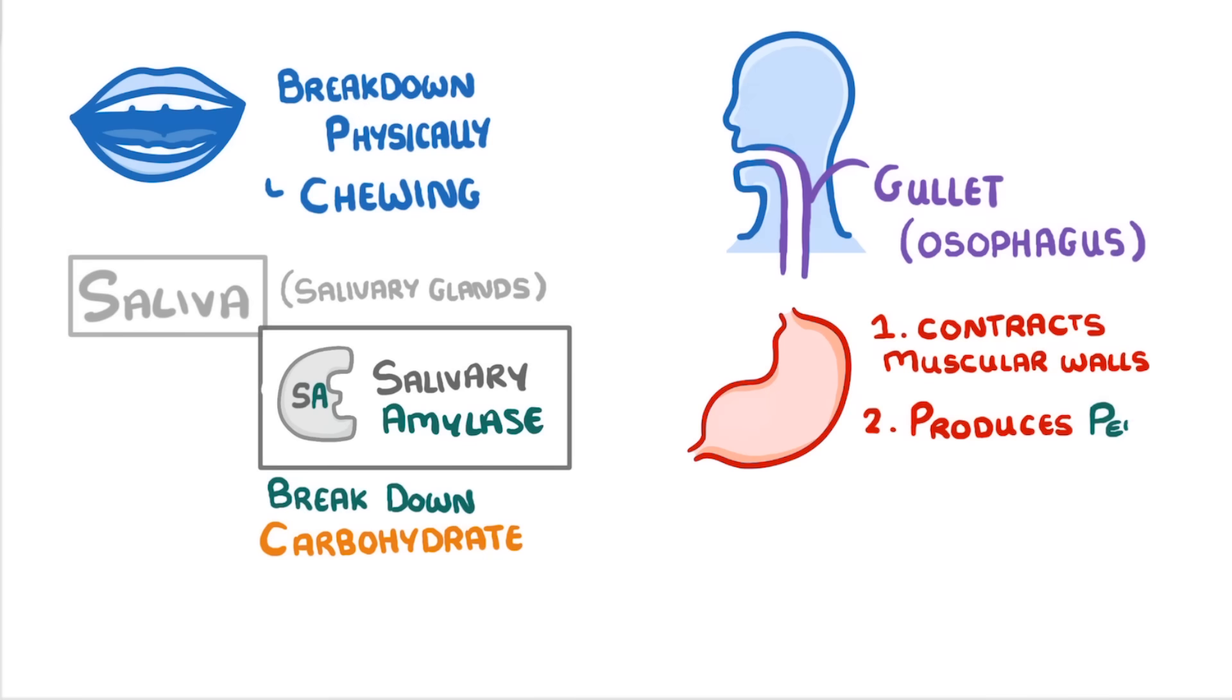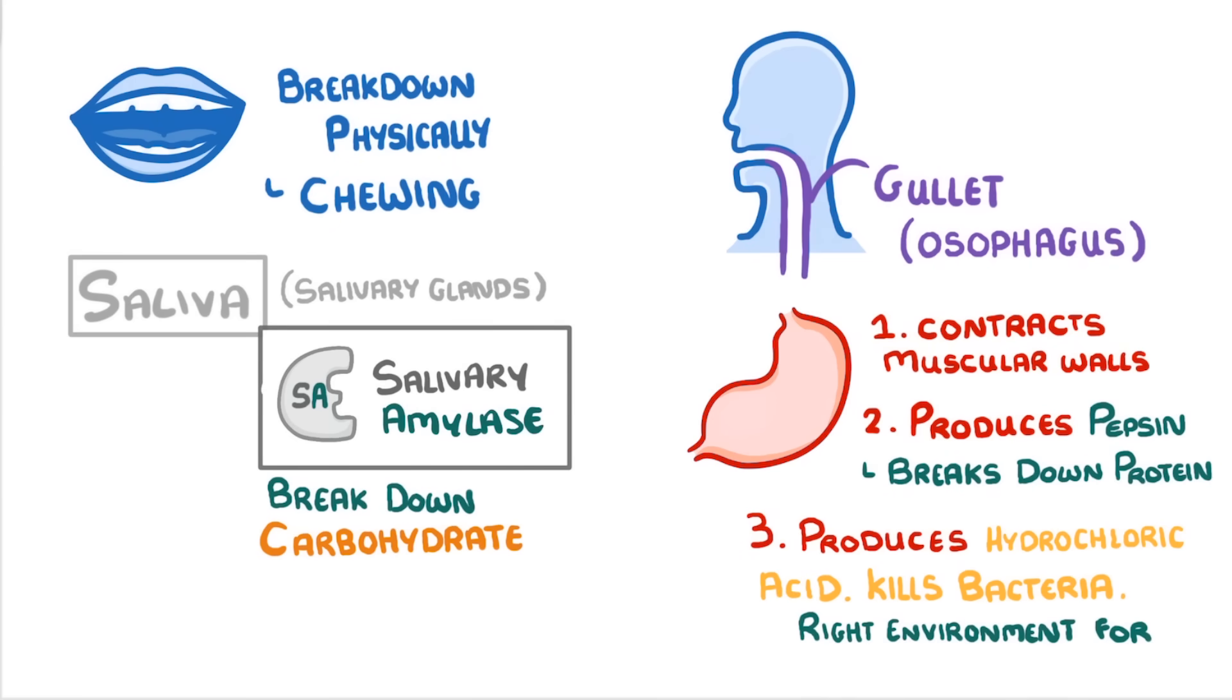Two, it produces pepsin, which is a protease enzyme that breaks down proteins. And three, it produces hydrochloric acid, which kills bacteria and also provides the right environment for the pepsin enzyme to work.